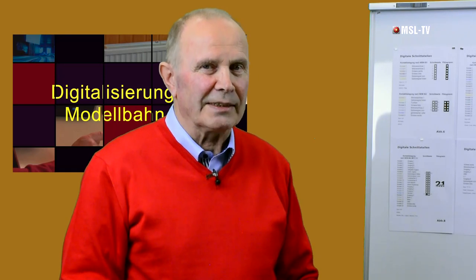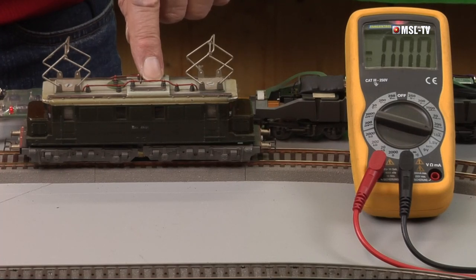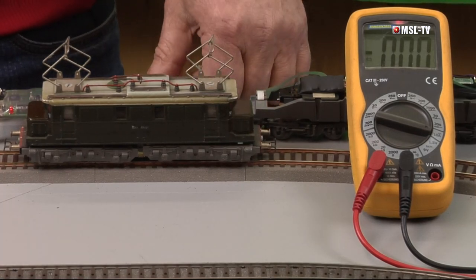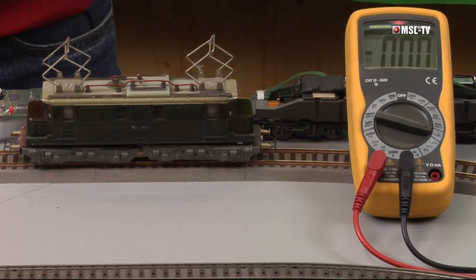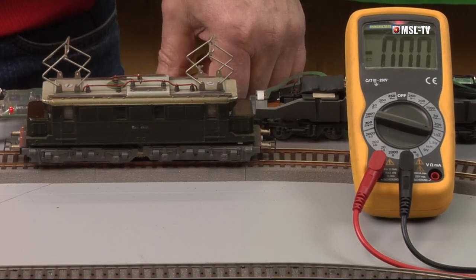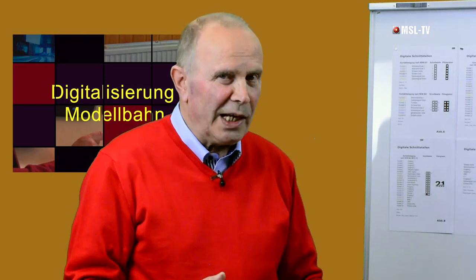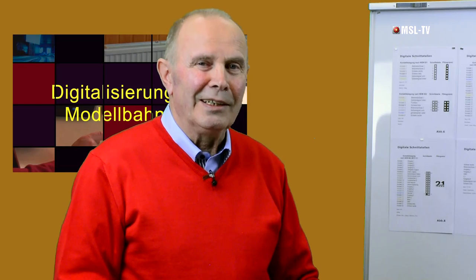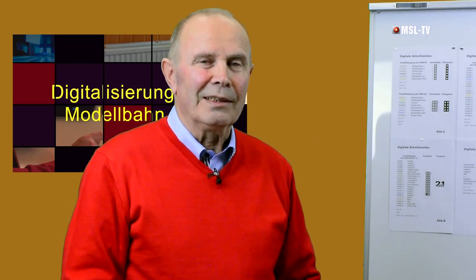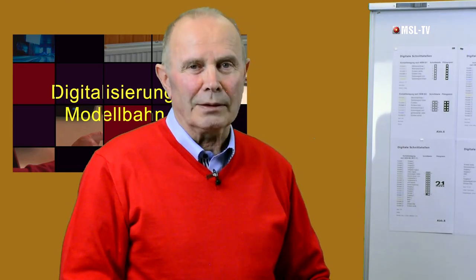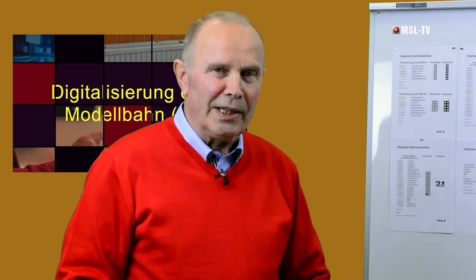Noch ein Hinweis: nehmen wir an, Sie hätten eine solche Maschine – die E44 von Pico aus den Anfängen der Modellbahnzeit nach dem Krieg. Diese Maschine hat ja durchaus musealen Wert. Wenn Sie die digitalisieren würden und die Maschine hätte vielleicht noch einen Marktwert von 200 Euro, dann würden Sie diesen Marktwert durch den Einbau eines Decoders zunichtemachen. Das sollte man sich dabei auch überlegen.